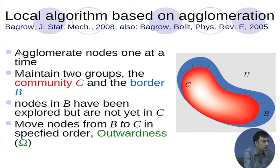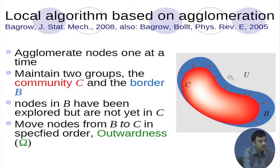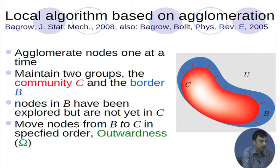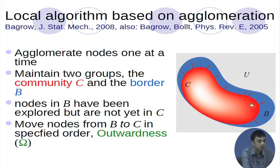This algorithm was proposed by Bagro in 2008. The basic idea is that in a network you keep track of two sets: the set C, which is the community, and the set B, which is the border from where new nodes enter into the community. At every iteration you agglomerate. The decision of putting a node from B into the community is based on a metric called outwardness.